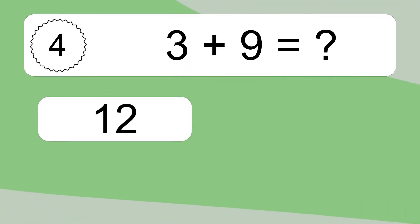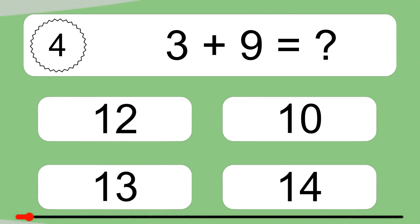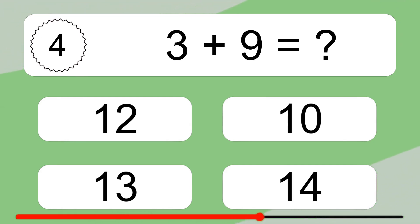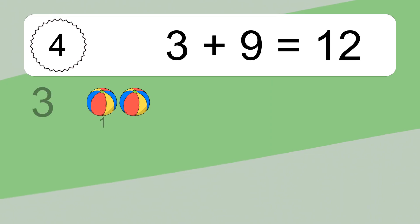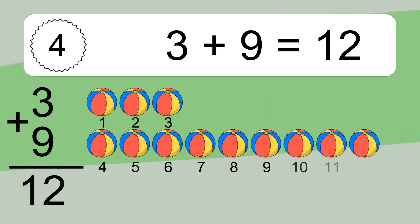3 plus 9 equals what? 3 plus 9 equals 12.